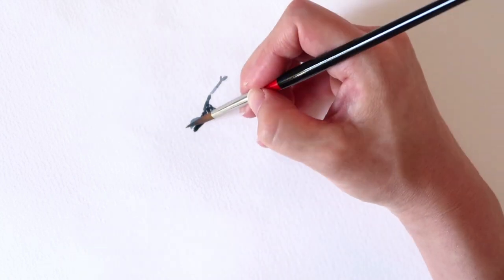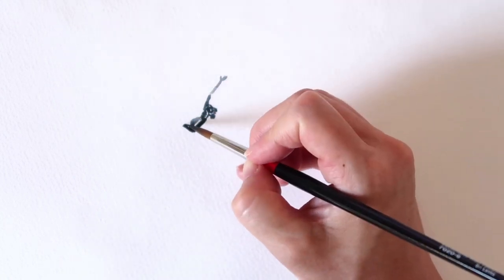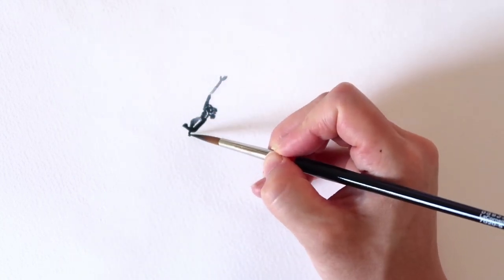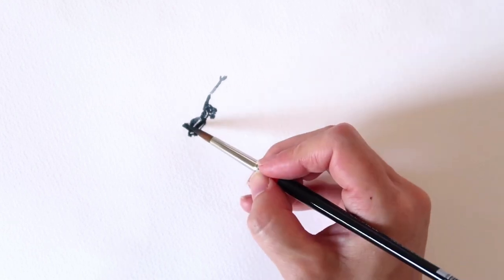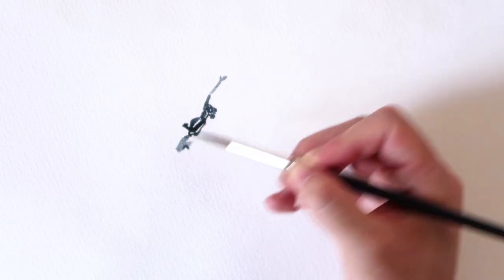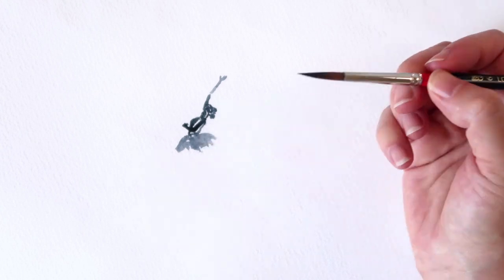So for example, if this arm is overlapping a torso, I'll leave a little bit of gaps so that you can see the separation between the two elements.